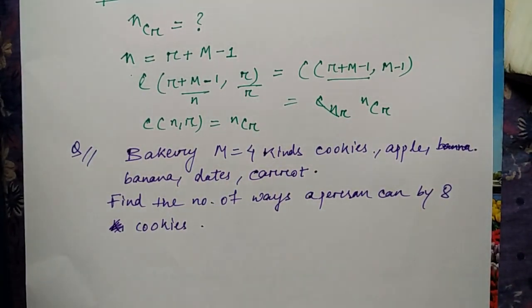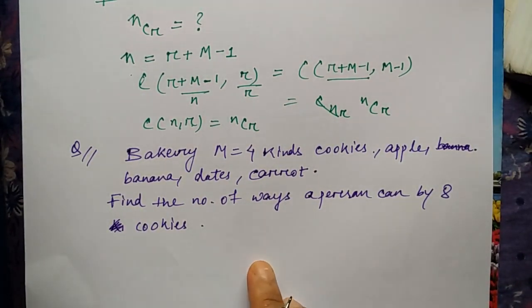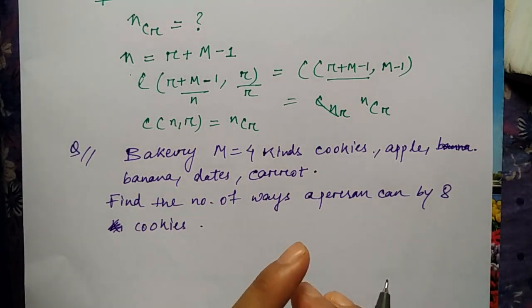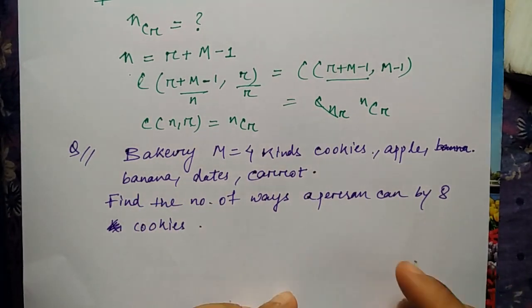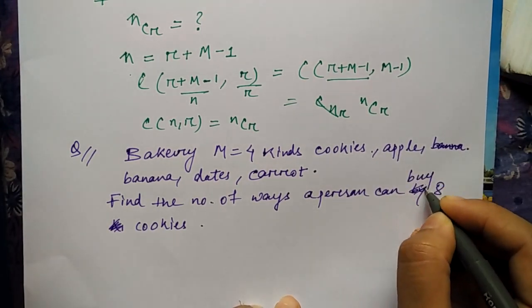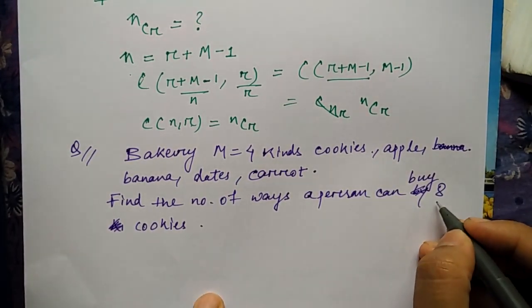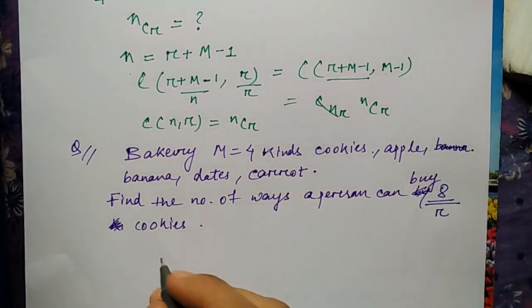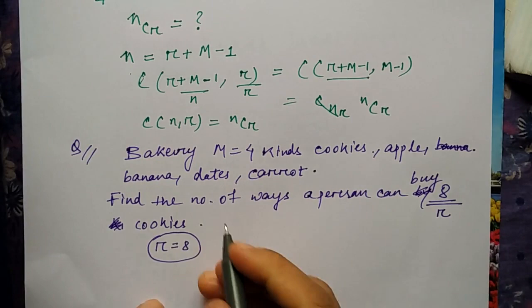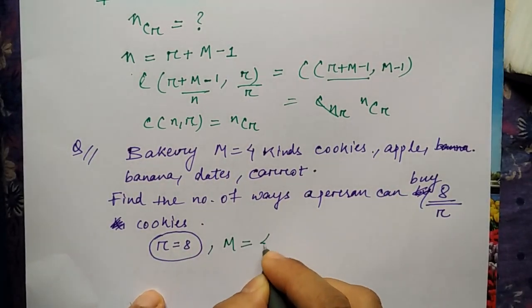I told you in nCr, n is the availability and r is to be selected. What you want is the value r. So here, what you want? Find the number of ways a person can buy eight cookies. So totally how many cookies you want? Eight. So that requirement will be the value of r. And m value is already given, that is four.